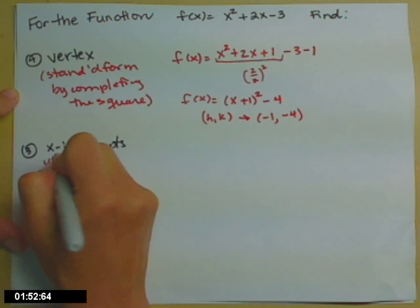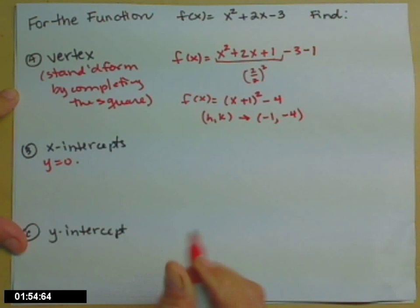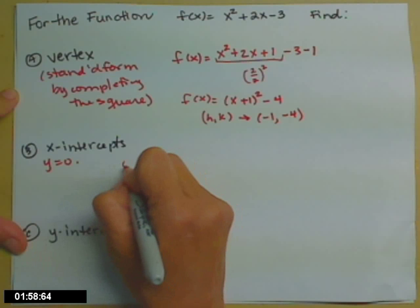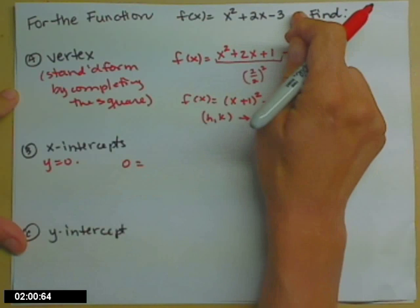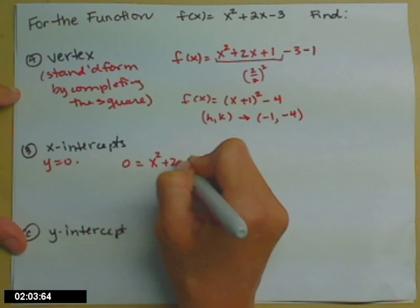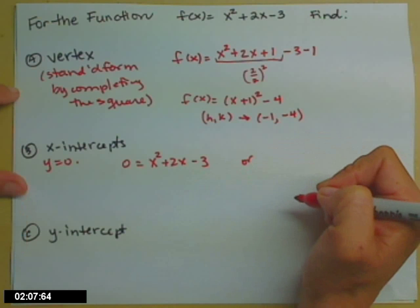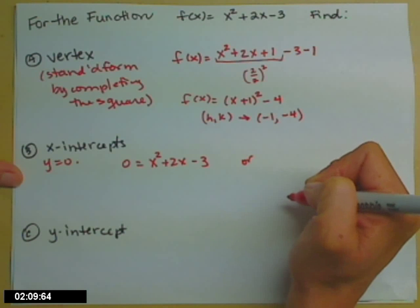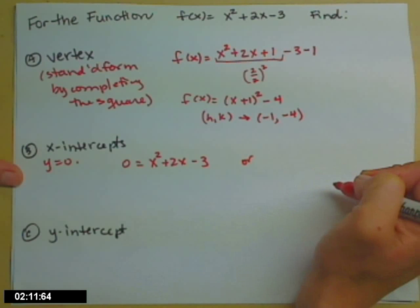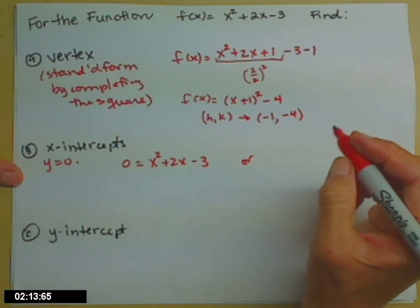X-intercepts. Y equals 0. In functions, y gets played by that f of x. So 0 equals. You can either go up to the top, x squared plus 2x minus 3, or, now here's the part that I find most students don't like, is the choice. It's like, don't give me a choice, just tell me what to do and I'll do that. I can't do it.